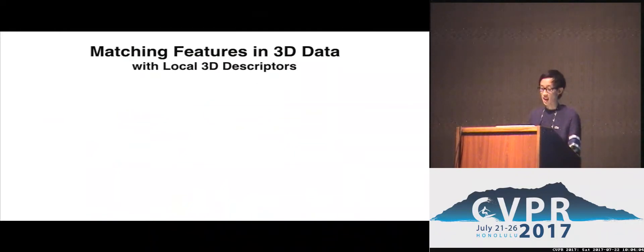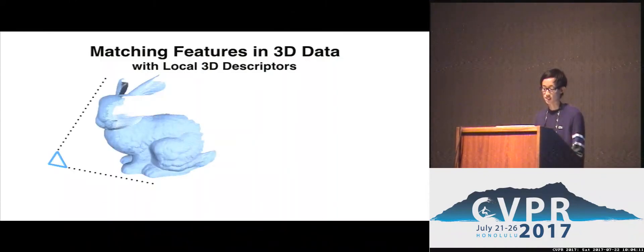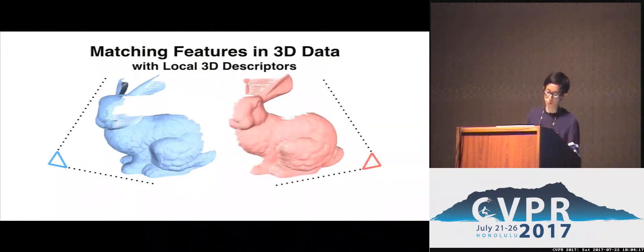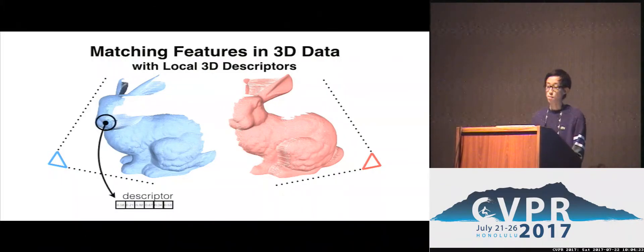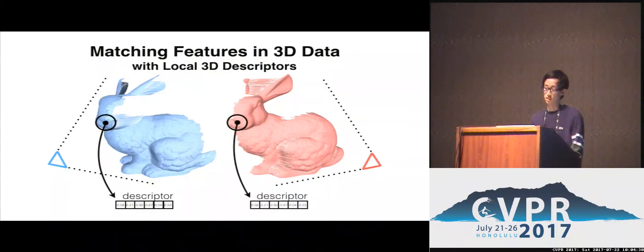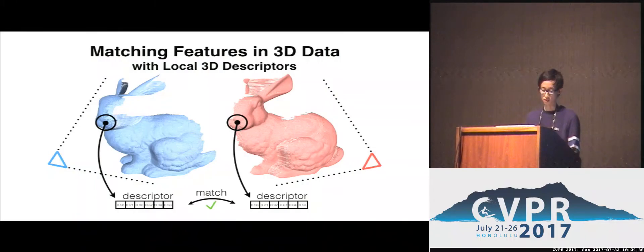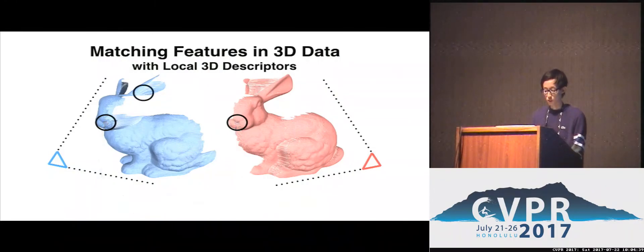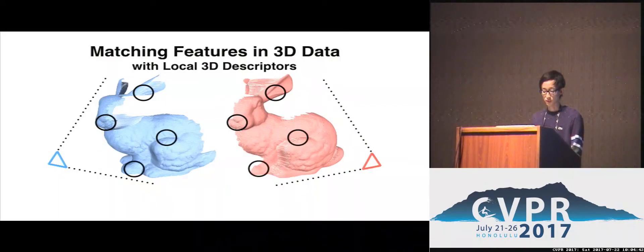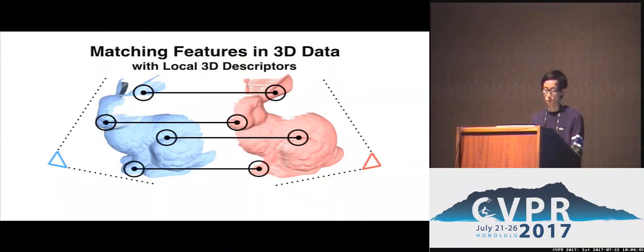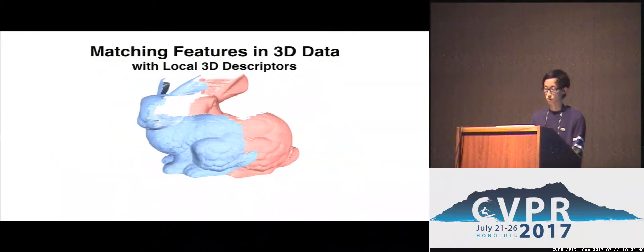Our work focuses on the task of matching features in 3D data with local 3D descriptors. For example, suppose you took a 3D camera and scanned the iconic Stanford bunny from a certain viewpoint and captured another 3D scan from a different viewpoint. The goal of a local 3D descriptor is to encode the 3D shape within a local region and map it into a descriptor vector of values. The descriptor should be repetitive enough to match similar local regions in the second scan, and discriminative enough to match uniquely without false positives.